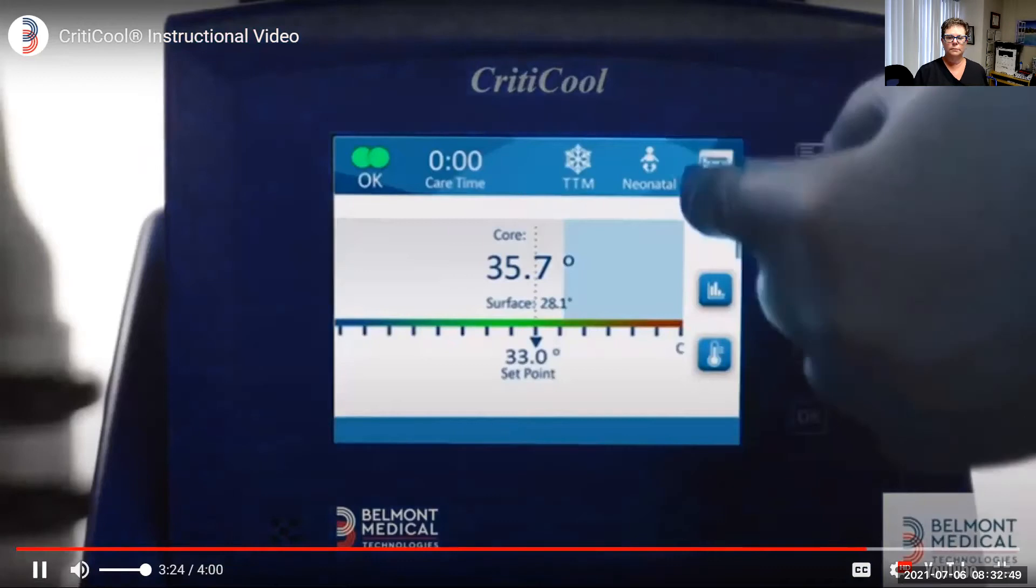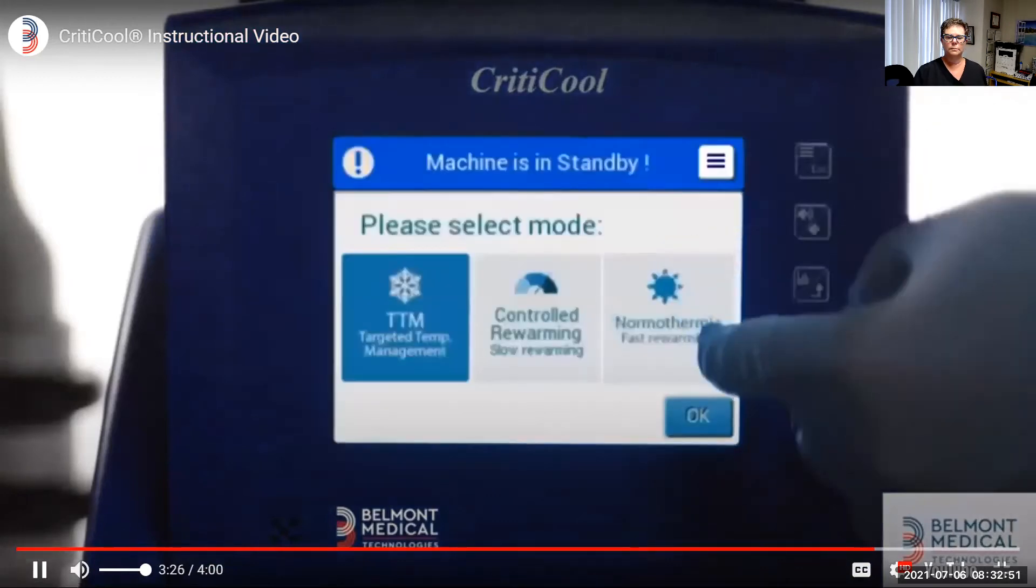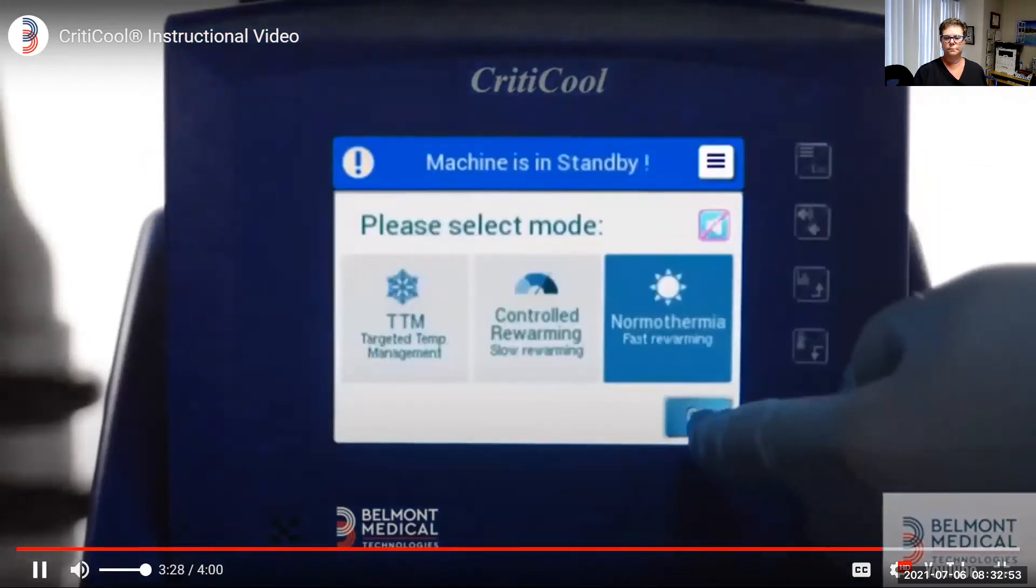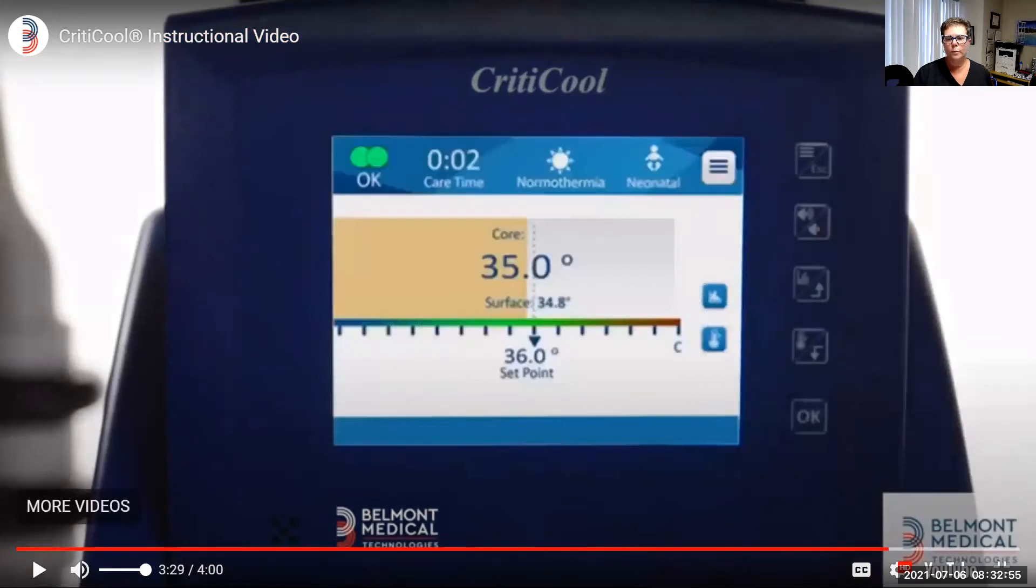Normothermia mode allows you to perform a rapid rewarming. The system will reach the desired temperature and keep it. We will not be using normothermia. That is indicated for patients likely in the emergency department that have suffered an accidental hypothermia. So it will not be a mode that we will use. So we will use targeted temperature management for the first 24 hours and controlled rewarming for the rewarming phase.